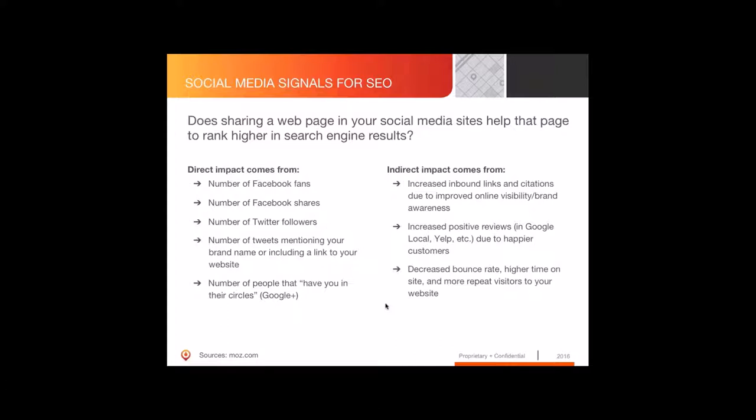The signals that come from social media impact search — those things get measured by search engines, and because they measure them, we think they use them. Google knows how many Facebook fans you've got, how many people are following you on Twitter, and what's going on with Google Plus. There's also an indirect impact from social media related to links — when you publish things on Facebook, you want to link back to your website, which helps it rank better.